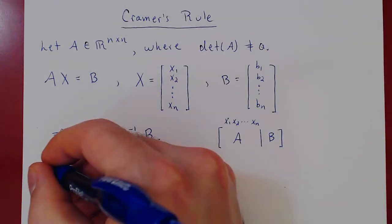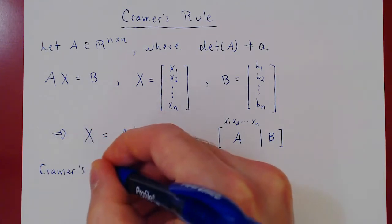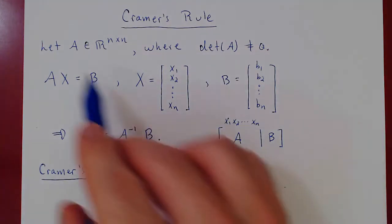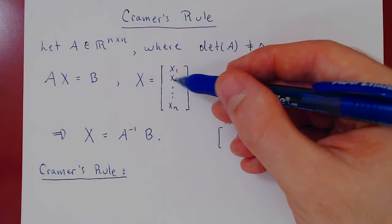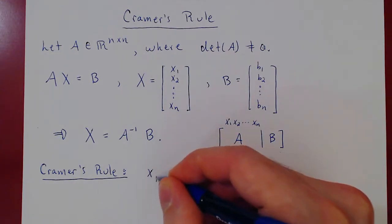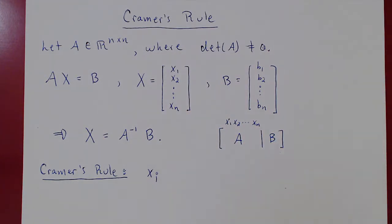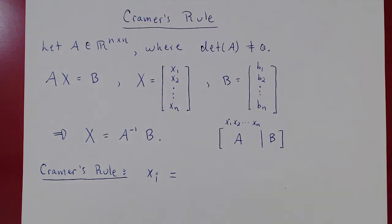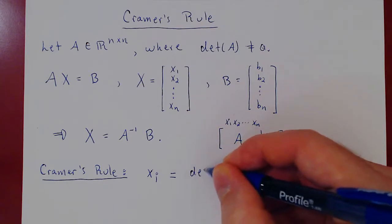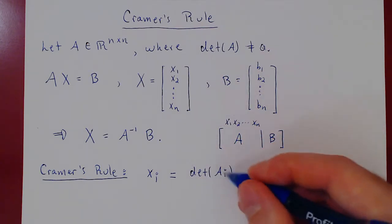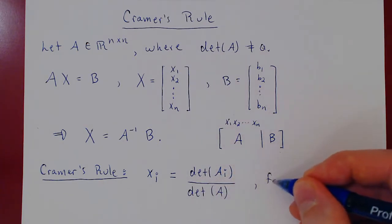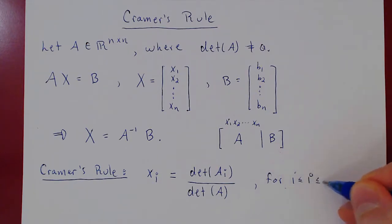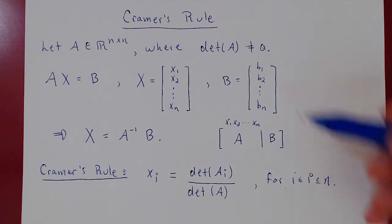Here's what Cramer's Rule says. With the same assumption — A is square, it's the matrix of coefficients, and the determinant is non-zero — suppose you want to solve for only one variable, say the i-th one, xi. Maybe i is 7 and you only care about x7. Cramer's Rule gives you a way to solve for xi without having to solve for any of the other variables. The result is the determinant of Ai over the determinant of the coefficient matrix, for any i between 1 and n.